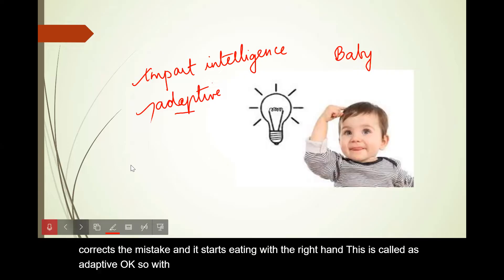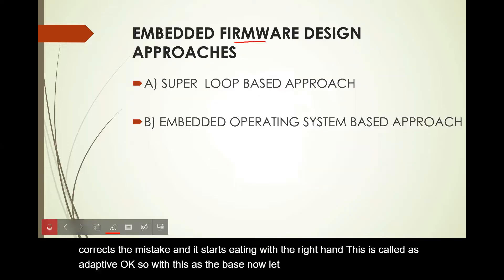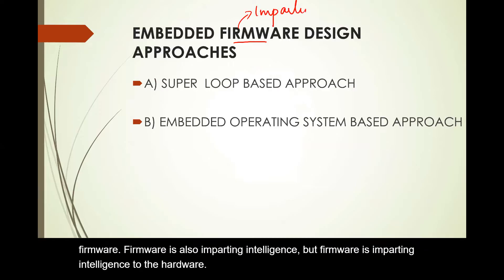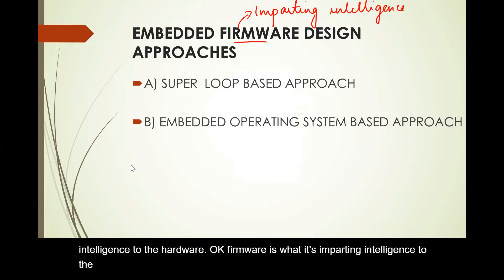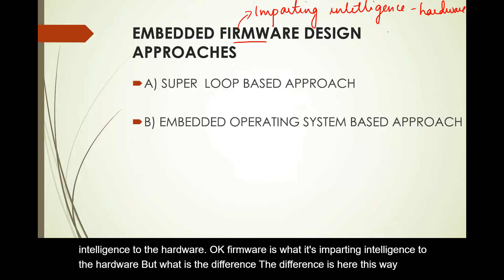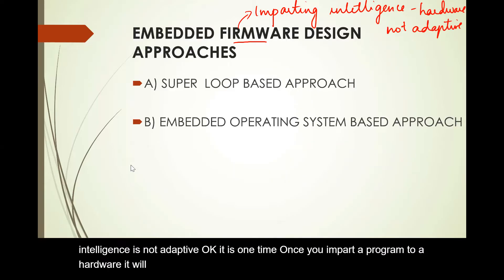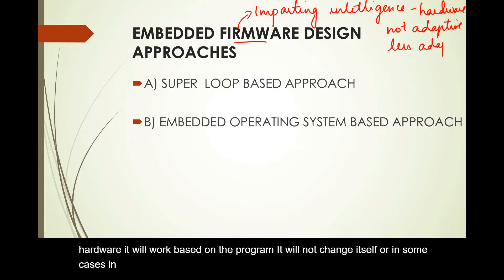With this as the base, let us understand what firmware is. Firmware is also imparting intelligence, but firmware is imparting intelligence to the hardware. The difference is that this way of imparting intelligence is not adaptive — it is one time. Once you impart a program to hardware, it will work based on that program. It will not change itself, or in some cases in control applications it is less adaptive.